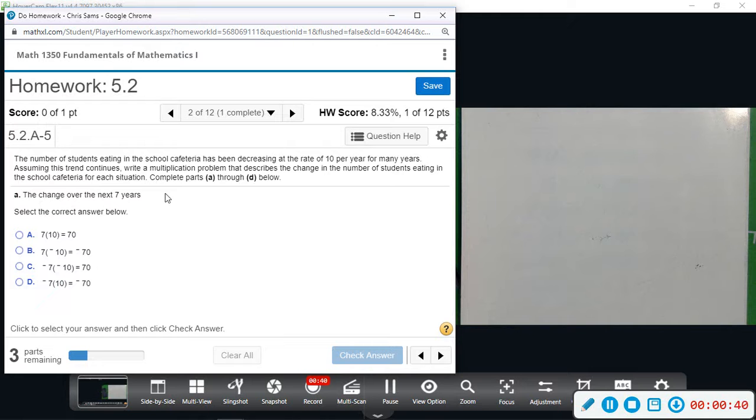And number two, we have A through D parts. So it says the number of students eating in the cafeteria has been decreasing at a rate of ten per year for many years. Assuming the trend continues, write a multiplication problem that describes a change in the number of students eating in the school cafeteria for each situation.